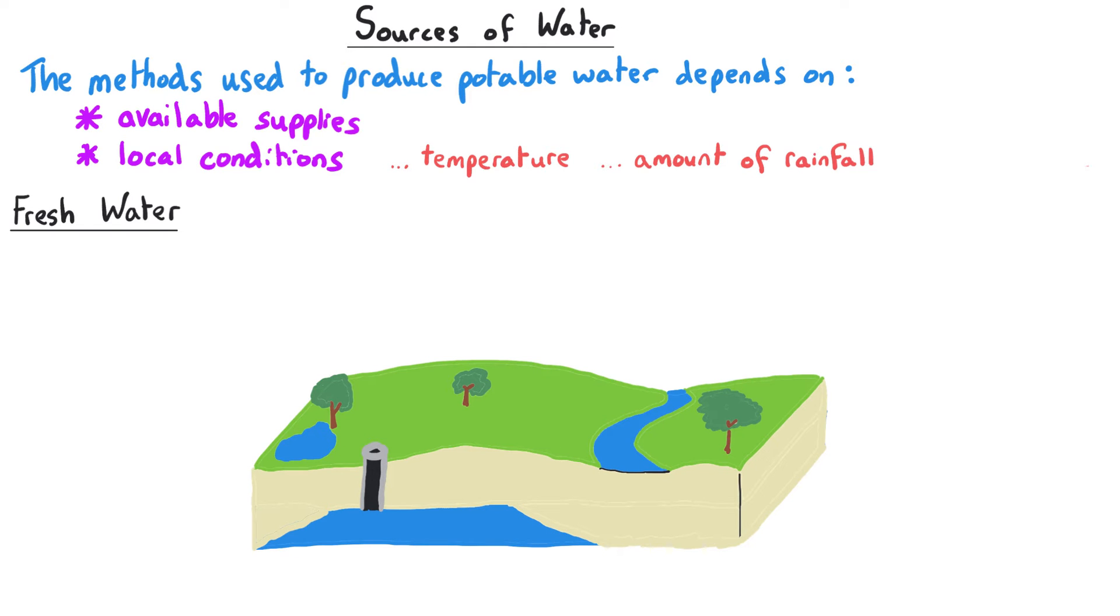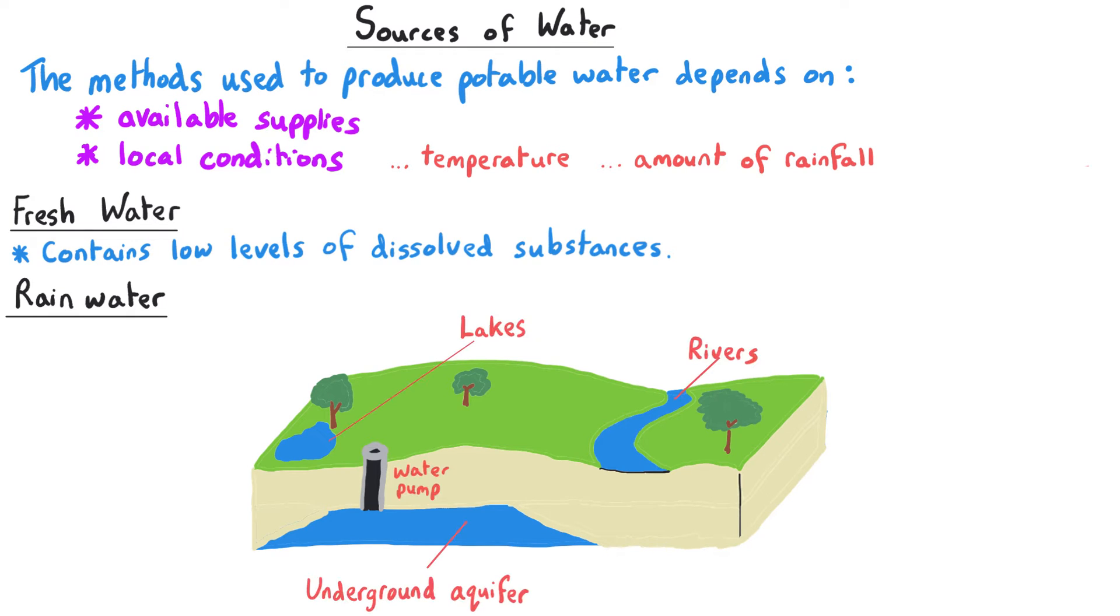The main source of water we choose to use is fresh water, which contains low levels of dissolved substances. Rain water is an example of this and collects in the ground, in rivers and lakes. Surface water is the easiest water to access, including lakes, rivers and reservoirs, but surface water is not the only source of fresh water.